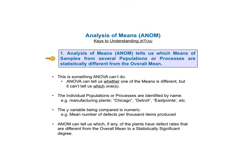Let's now begin our detailed explanations of each key to understanding. KTU number one says analysis of means, ANOM, tells us which means of samples from several populations or processes are statistically different from the overall mean. With ANOVA, we can only find out whether one or more sample means are different from the others to a statistically significant degree. ANOVA cannot tell us which one or which ones are different, which limits its usefulness. ANOM overcomes this shortcoming.